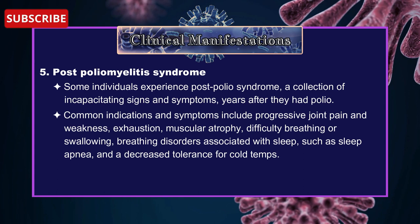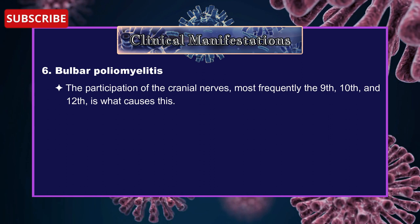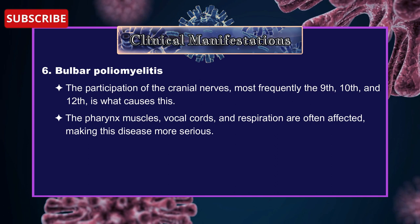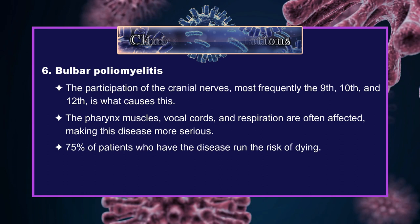6. Bulbar poliomyelitis: The participation of cranial nerves, most frequently the 9th, 10th, and 12th, is what causes this. The fine neck muscles, vocal cords, and respiration are often affected, making this disease more serious. 75% of patients have the risk of dying.